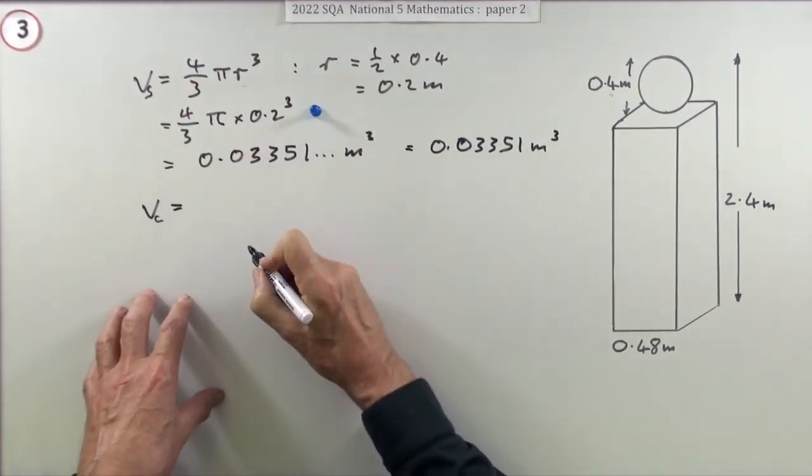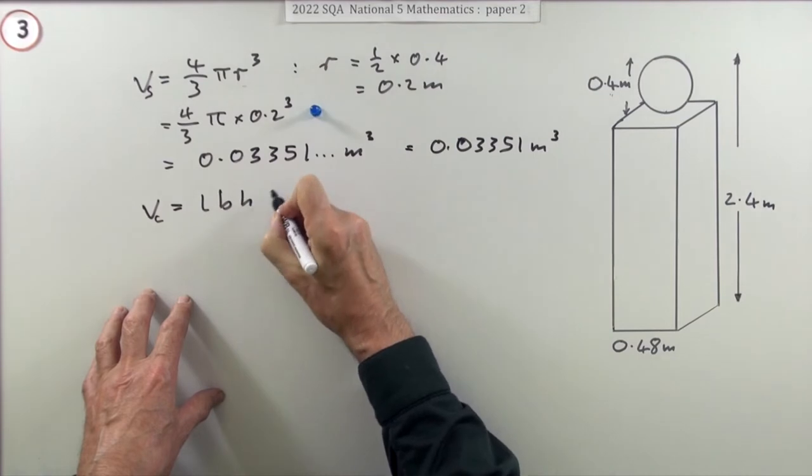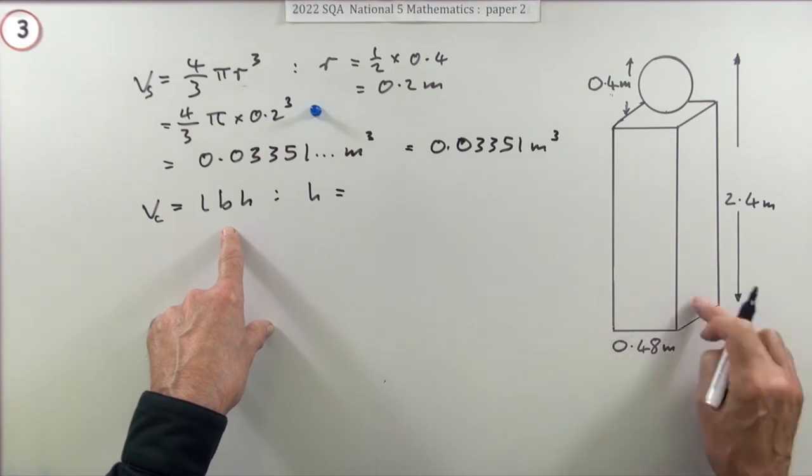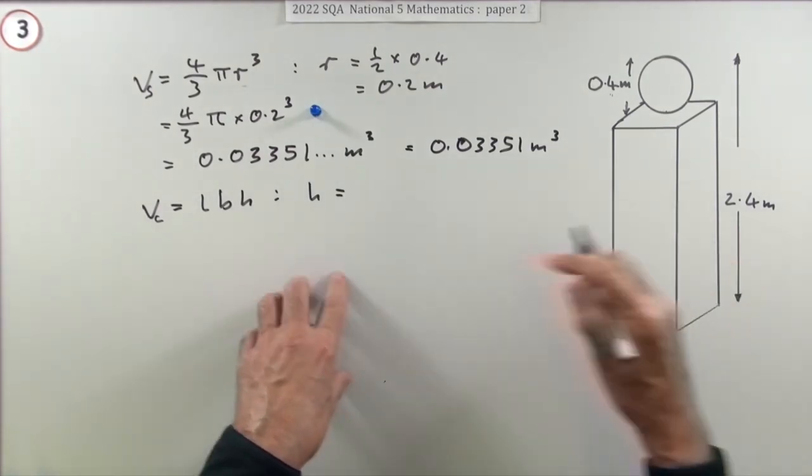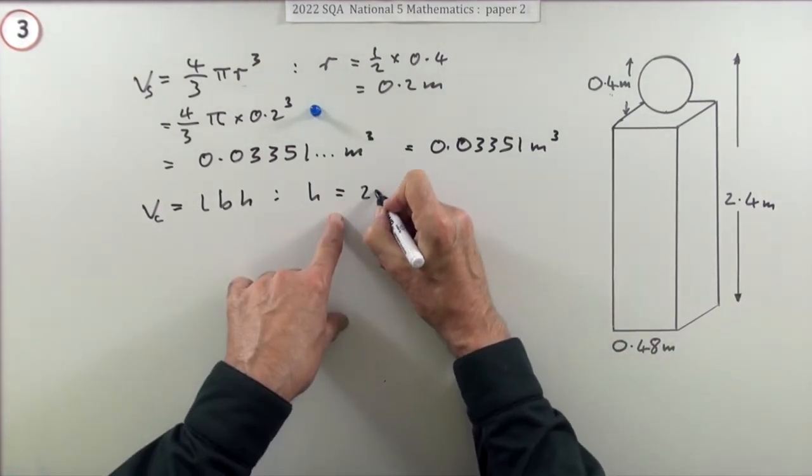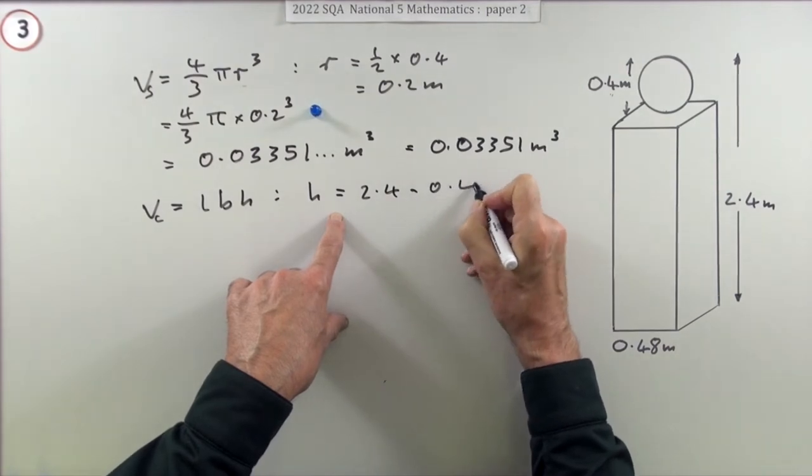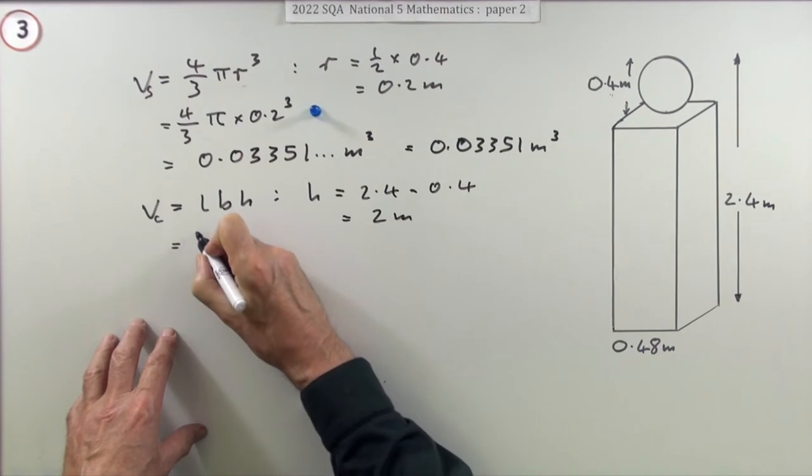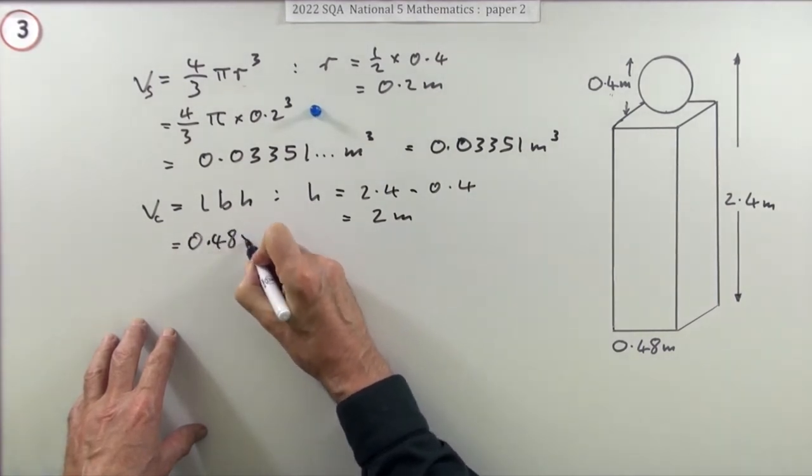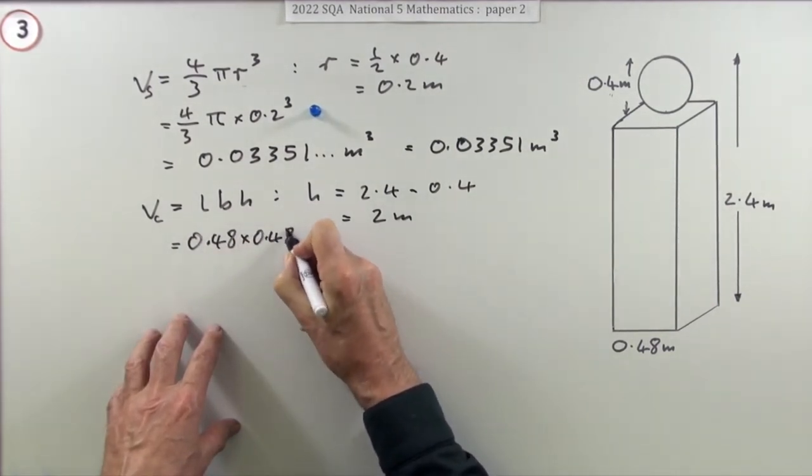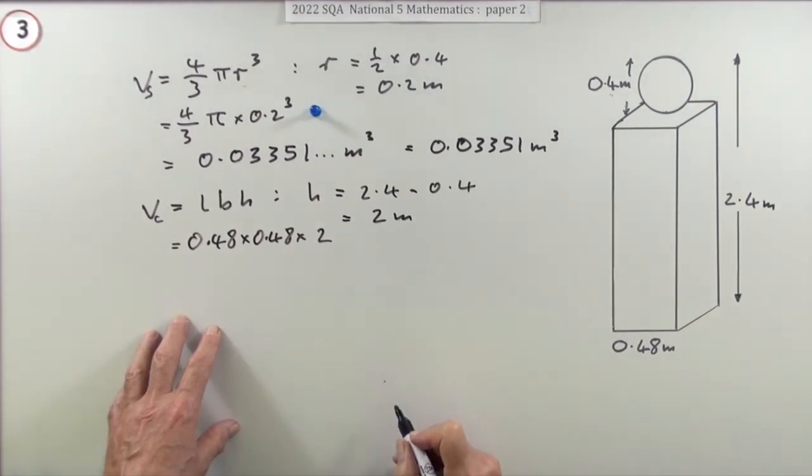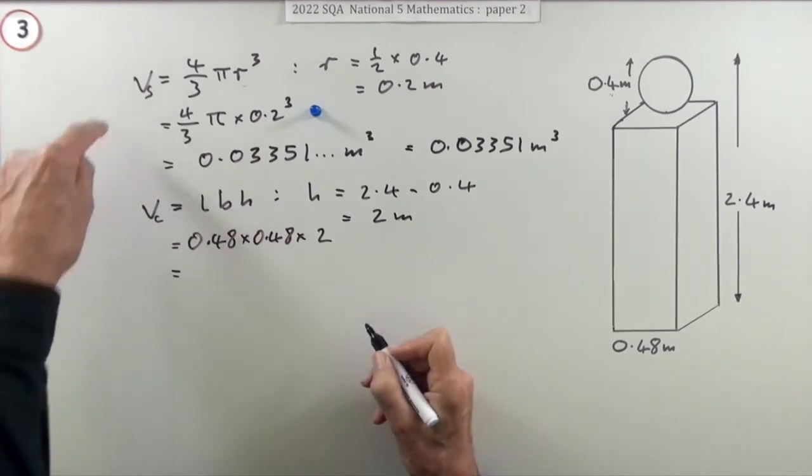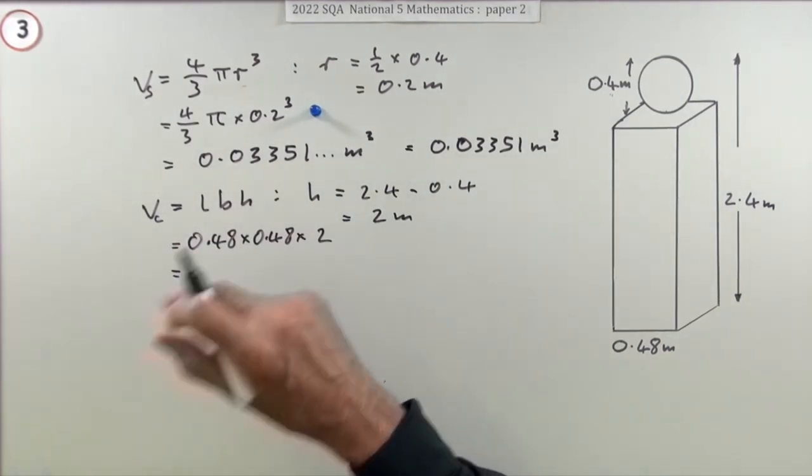Now the cuboid. That was the sphere, this is the cuboid. That's just length times breadth times height. The length and breadth are both 0.48 because it said the base was a square. The height isn't 2.4, it's 2.4 minus the 0.4, so that'll be 2 meters.